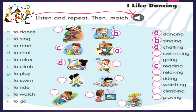We continue. Letter E: to relax, relajarse — relaxing. Y lo hemos unido con la imagen del niño que está relajándose. Letter F: to climb, escalar — climbing. Very good. Climbing, escalando. Y también hemos unido con la imagen donde vemos al niño que está escalando. Letter G: to play, jugar — playing. Very good. Playing, jugando. También hemos unido con la imagen donde vemos al niño que está jugando.